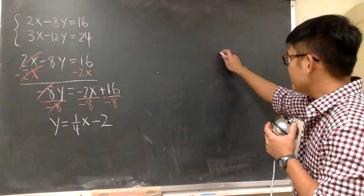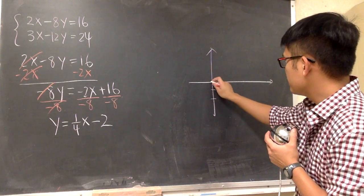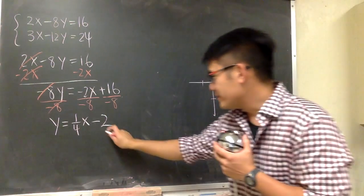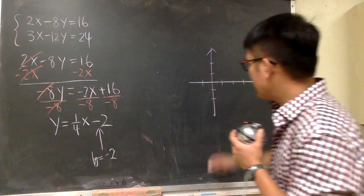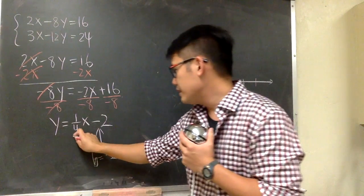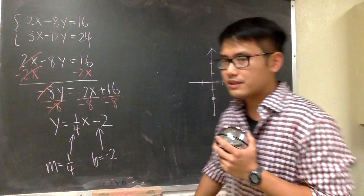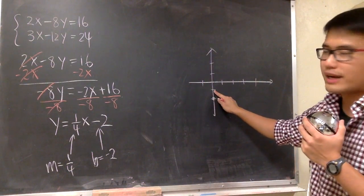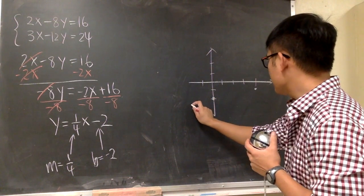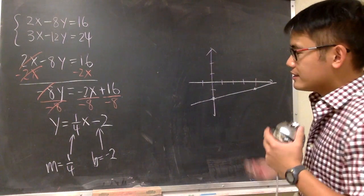Let's put down the graph paper. The b value is -2, so on the y-axis we go to negative 2 and put a point there. The slope is 1/4, meaning we go up once and then move to the right four times. From that point, go up once and move right 1, 2, 3, 4 — another point. Connect the dots. That's the first line.